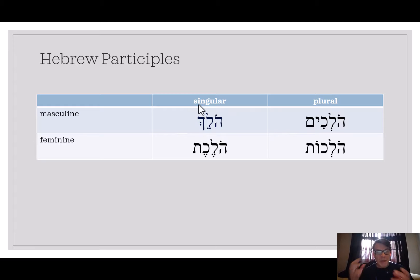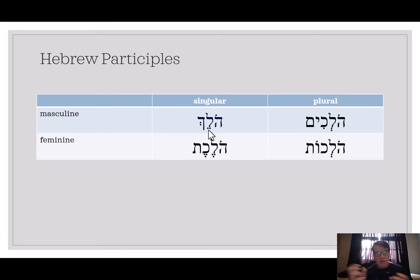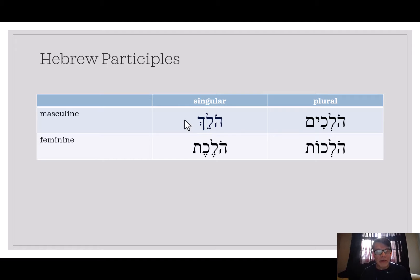In the base masculine singular participle, as we saw in Jonah 1 — I think it was verse 13 — this long O, long E pattern is typical of the third masculine singular. We transliterate it as a long E, it's pronounced A — we just memorize these things and go on with it. HOLAK would be a typical third masculine singular participle, going with some masculine singular thing.